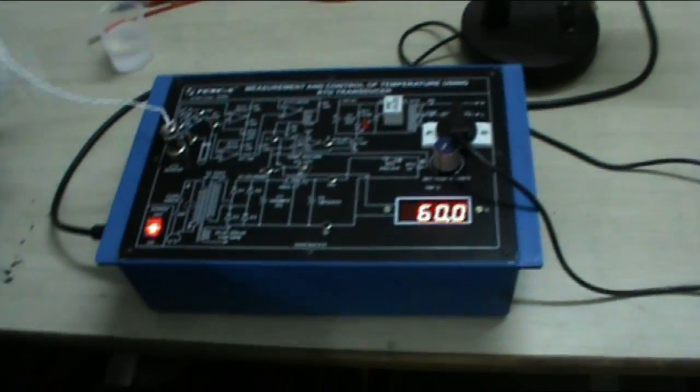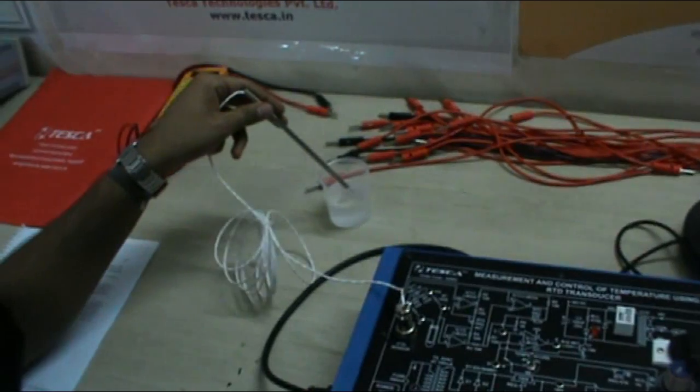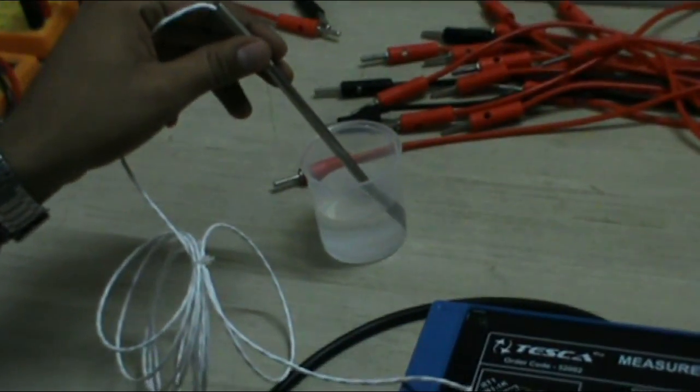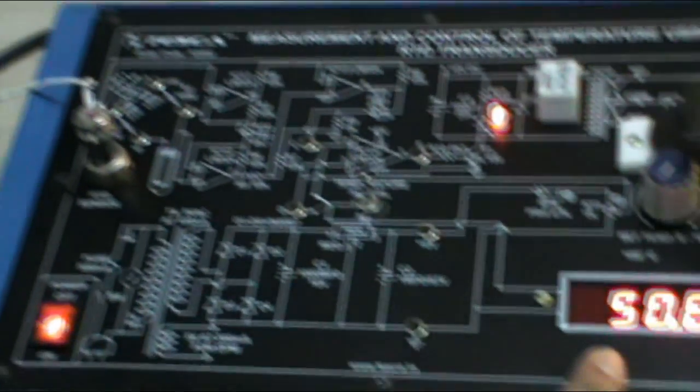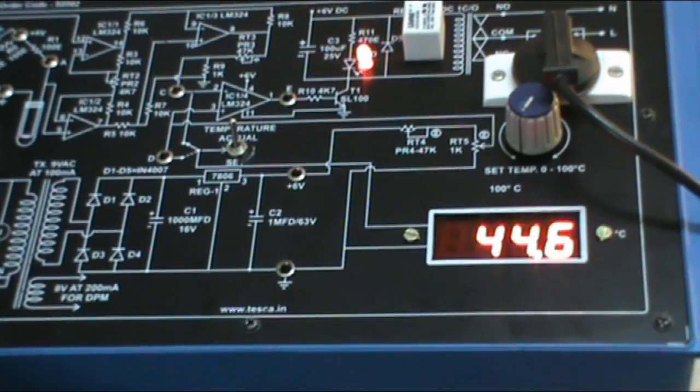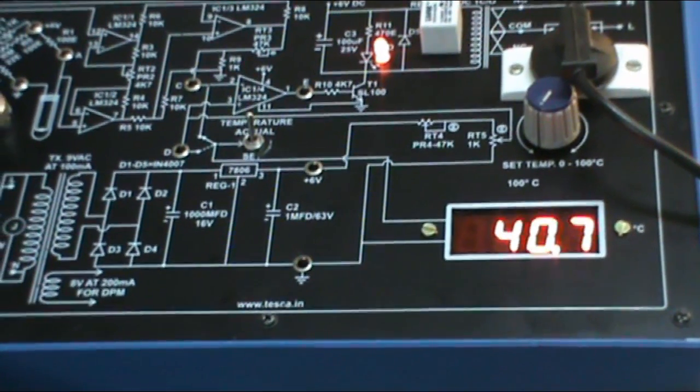As you can see, as it crosses the 55 degrees, the lamp is off. Now when we cool down this RTD sensor with the water, you can see the temperature will come down, and as it comes below 55 degrees, the lamp will glow again.